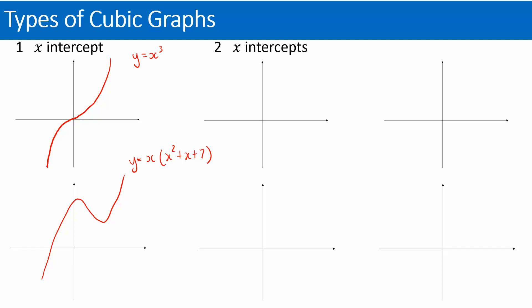Your second type — you can have two x-axis intercepts. One possibility is a cross through one point, but the dip actually touches the x-axis. This would mean the second factor you can solve, and it results in a turning point that curves back up. For example, something like x plus one times x minus one squared. The squared bracket means you have a repeated factor — instead of cutting through, it turns back. That's what we call a repeated factor.